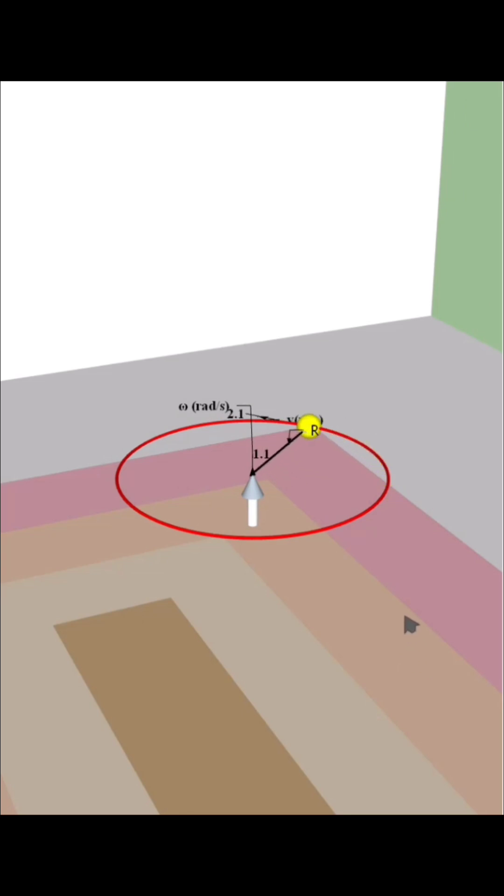And hence v equals r omega. The ratio of v to omega is constant and that is equal to the radius of the circle.